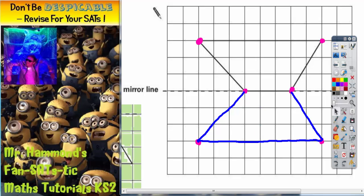The final method for doing this would actually be to get a piece of tracing paper, trace the original shape but not only trace the original shape, also trace the mirror line.